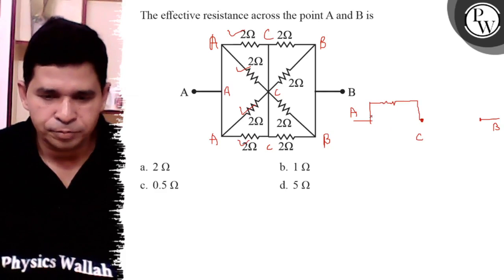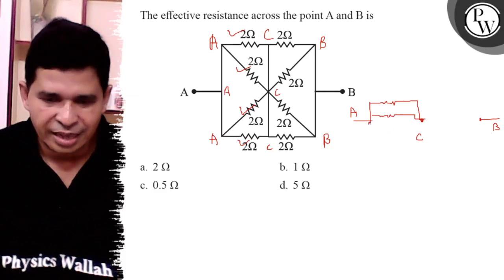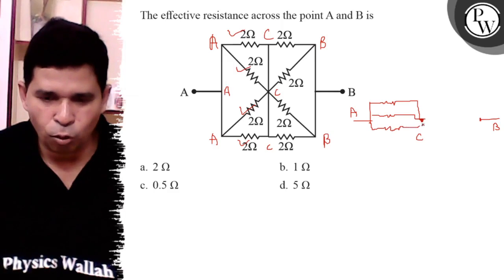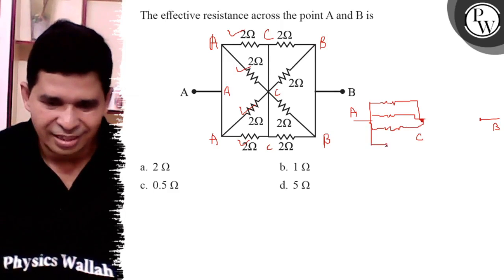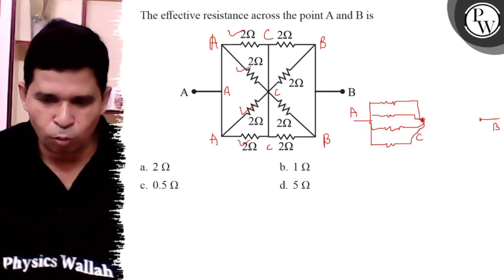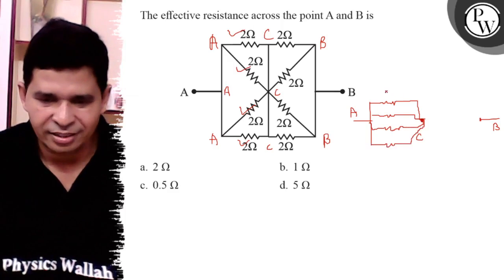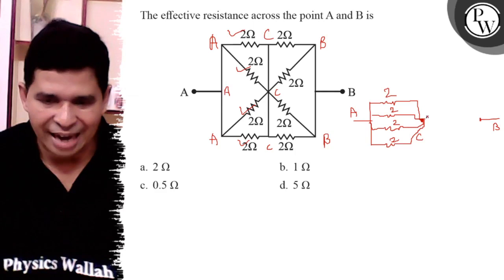So it is 2 ohm, it is also 2 ohm, and it is also 2 ohm, and it is also 2 ohm. So it is a C point. 2, 2, 2, 2 all are in parallel.